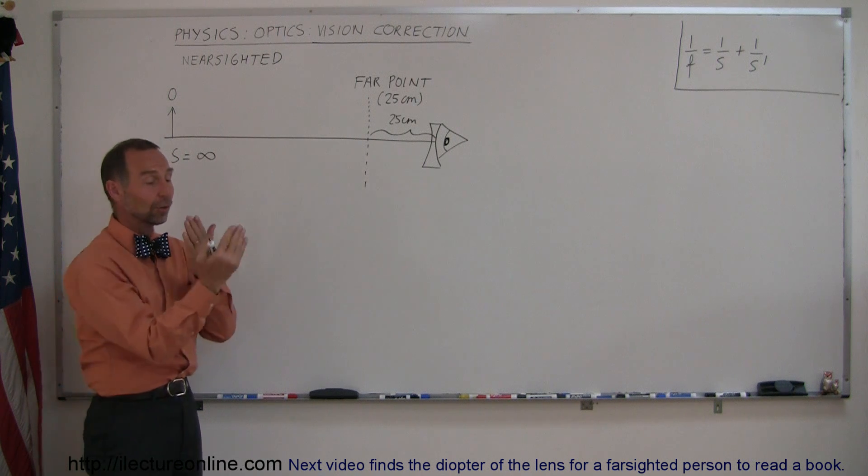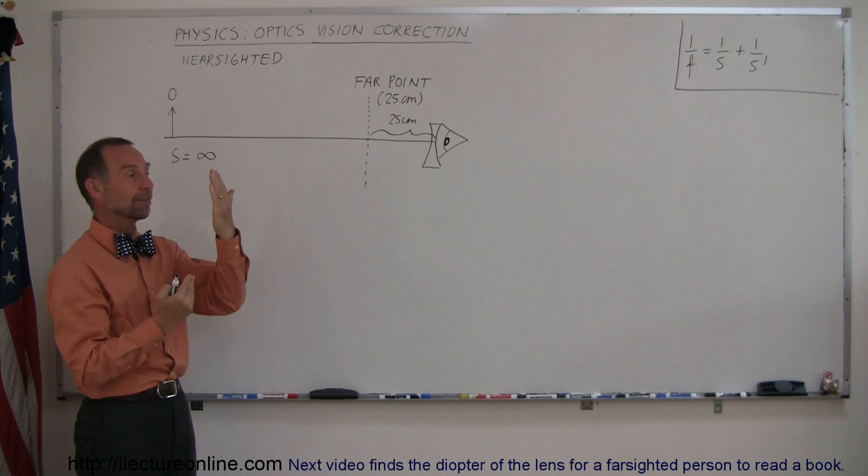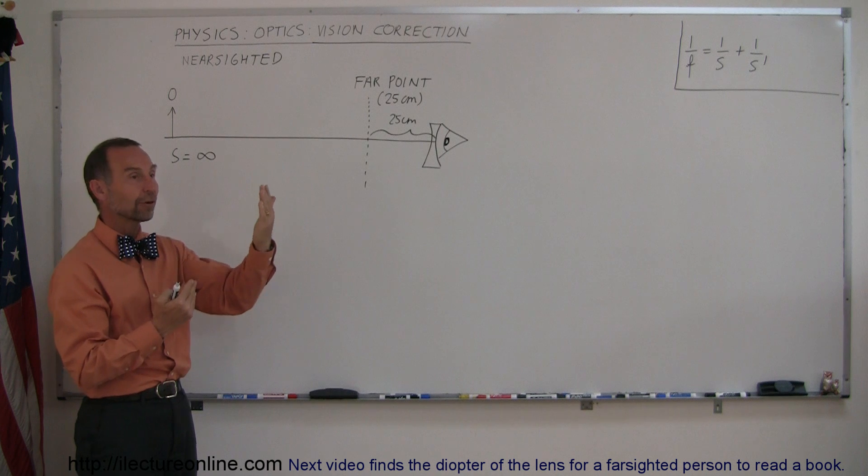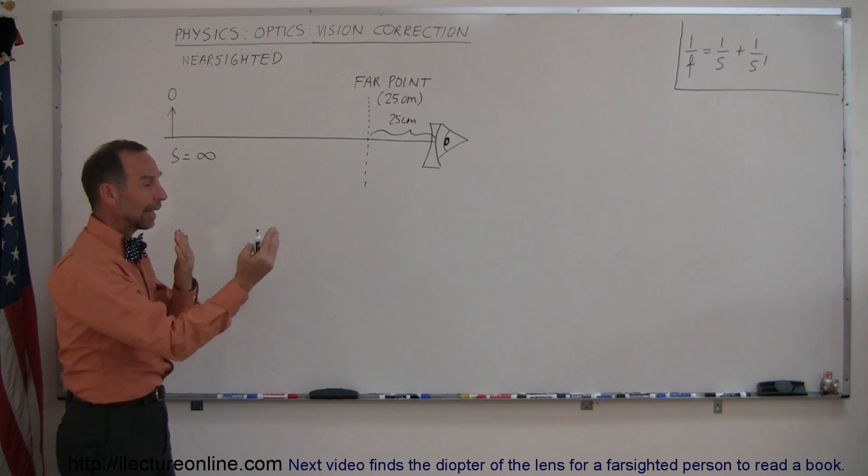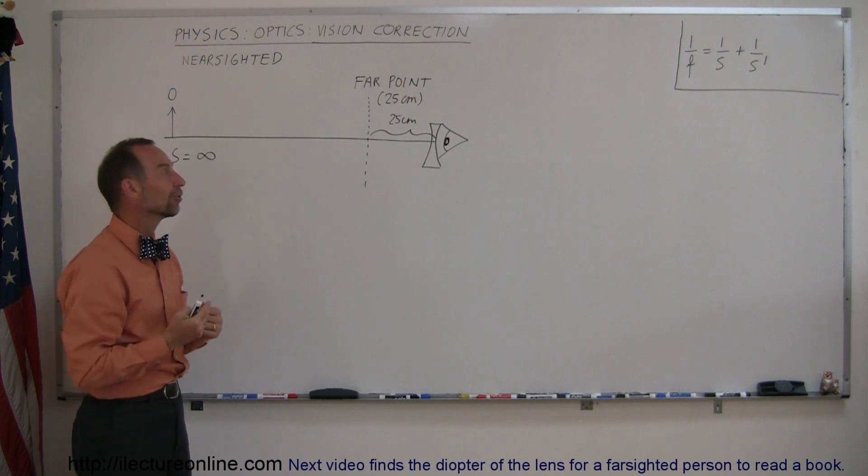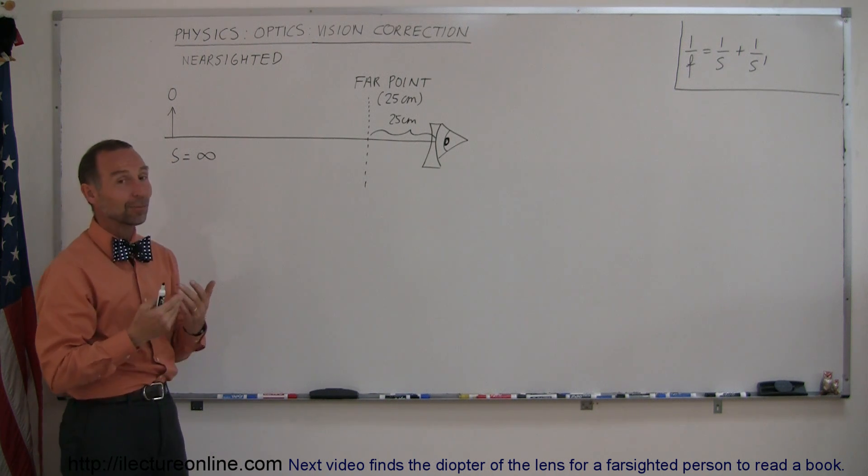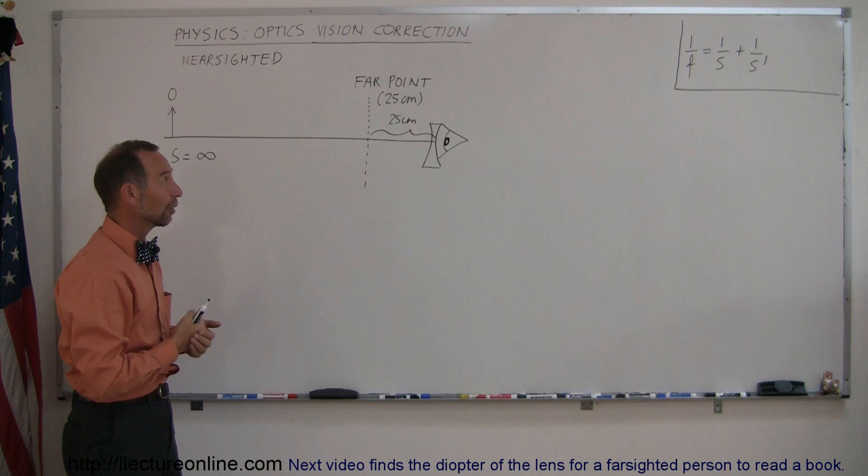Now, 25 centimeters is only 10 inches. So that means that anything past 10 inches begins to look very fuzzy, not very focused. And anything within 10 inches, the person can see clearly. That's obviously a problem if you want to see things clearly far away.